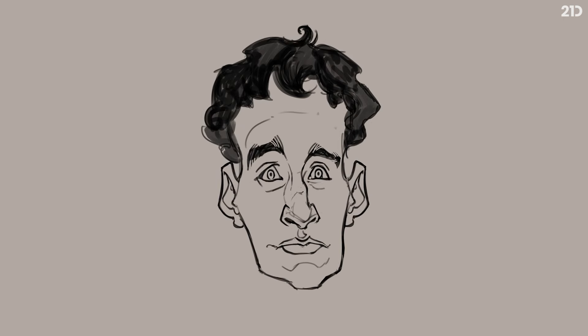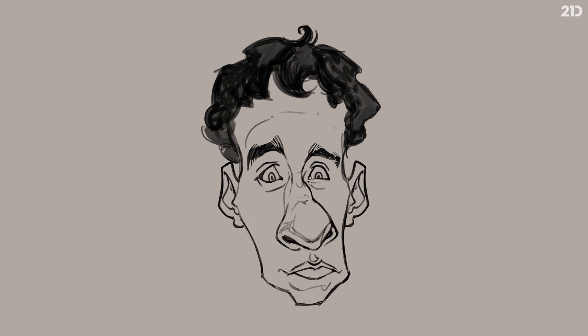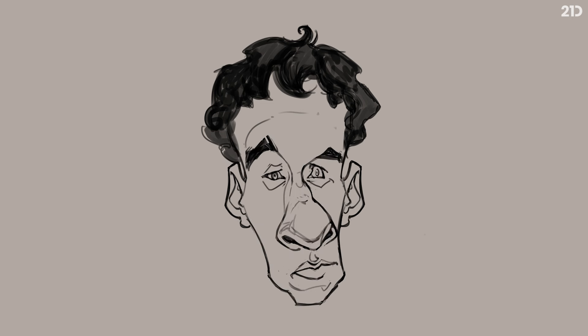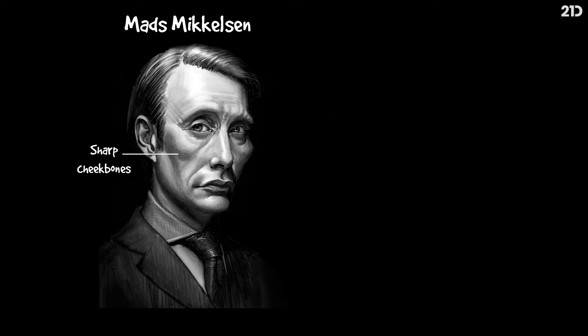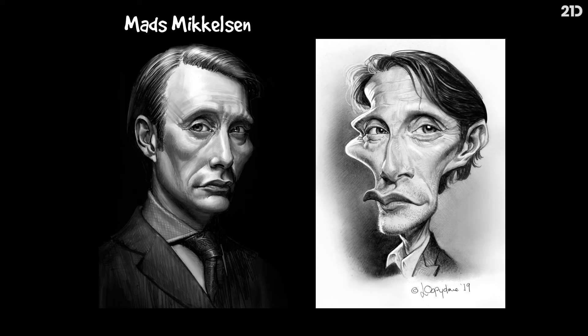This exaggeration can be making a facial feature bigger or smaller, closer or further apart, or even simplifying a shape. What you choose to exaggerate will be decided by what you want to emphasize. Take for example the Danish actor Mads Mikkelsen. He has a strong brow over heavily lidded eyes, a distinctive mouth, and cheekbones so sharp you can cut yourself on them. In this caricature of him, I have exaggerated those features, drawing attention to those visual cues that say this is Mads.